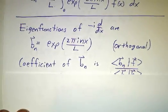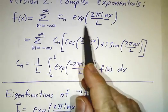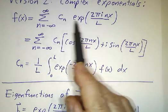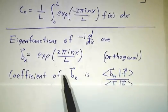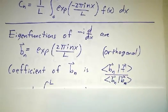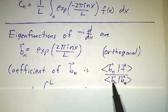So if you want to expand in this basis, you can expand anything in this basis. That's what this expression is telling you. It's a linear combination of the basis vectors. And the coefficient of each basis vector is just the inner product of that with your function, divided by the inner product of that with itself.